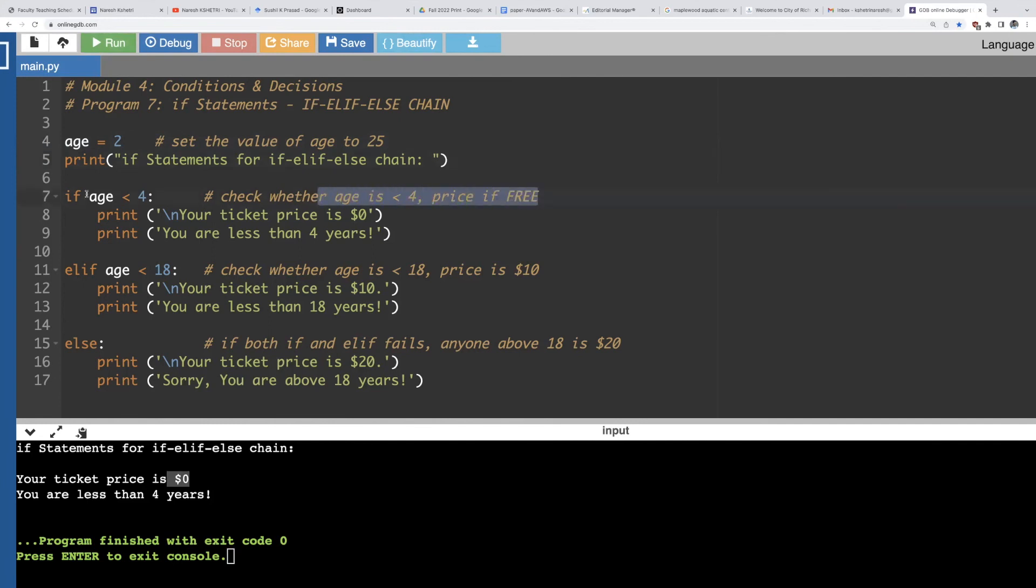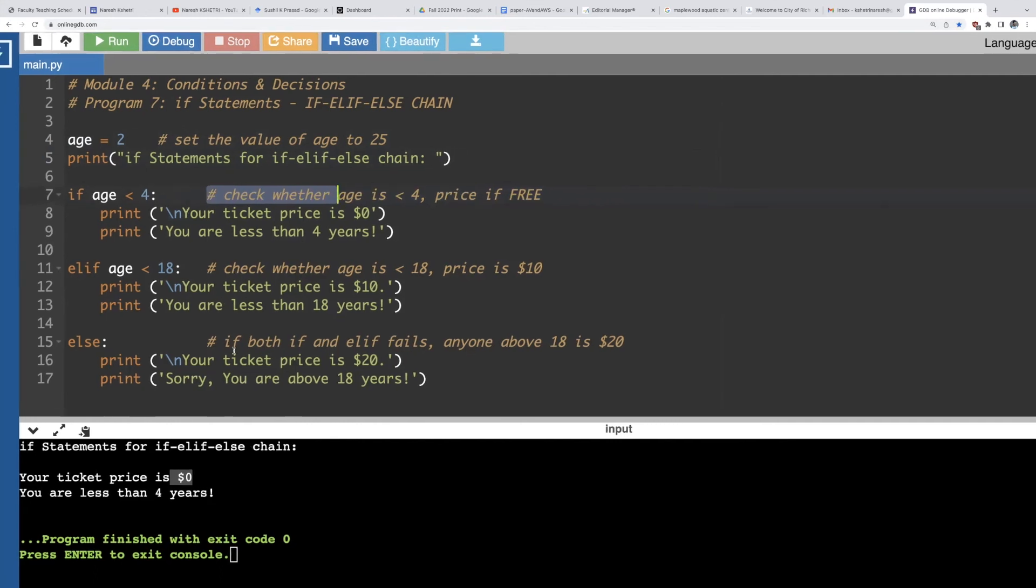because this has executed the first true and it didn't check the rest elif and the else part but in the previous one both conditions were checked and it went to the third one that is the else part.